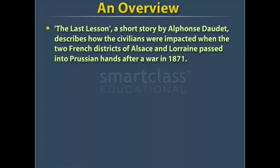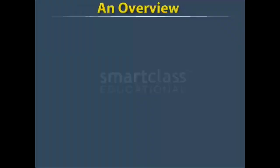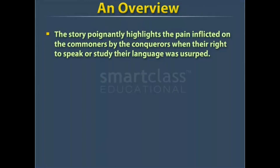An overview: 'The Last Lesson,' a short story by Alphonse Daudet, describes how the civilians were impacted when the two French districts of Alsace and Lorraine passed into Prussian hands after a war in 1871. According to the new order, the teaching of French was to be discontinued in schools of these two districts and only German was to be taught. The story poignantly highlights the pain inflicted on the commoners by the conquerors when their right to speak or study their language was usurped.